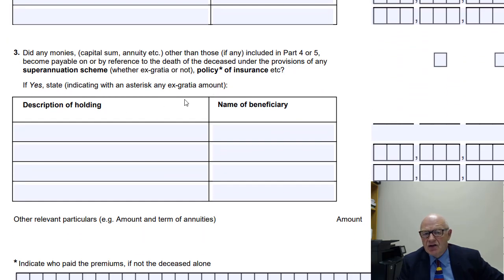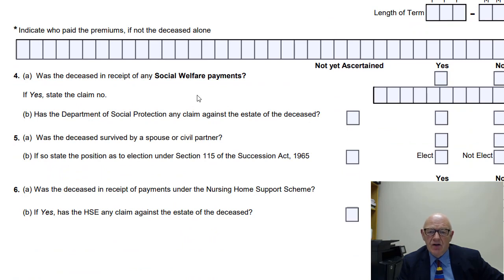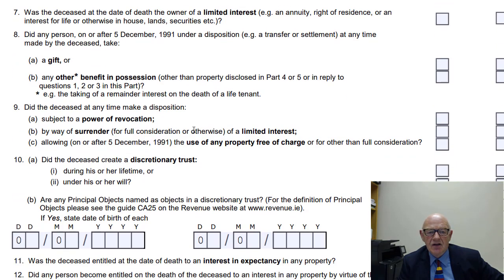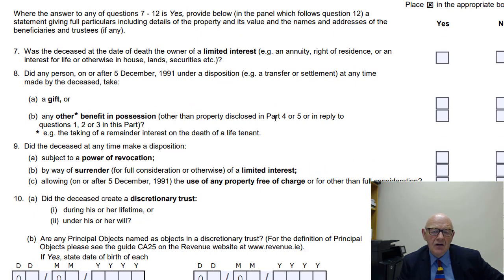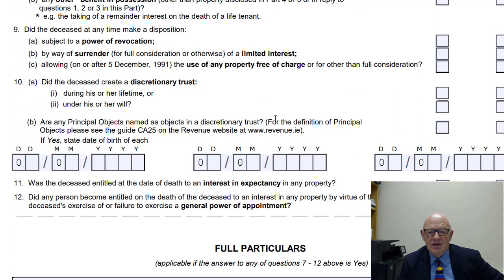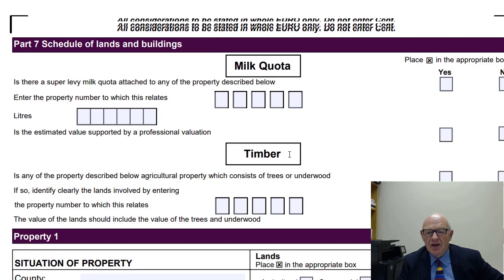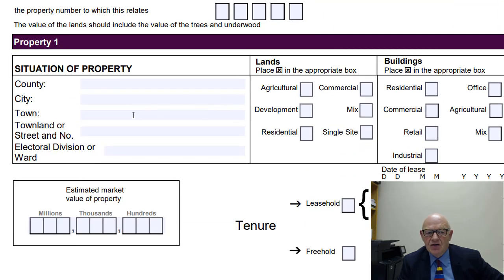There are questions in relation to superannuation schemes and policies of insurance. Then, was the deceased in receipt of any social welfare payments? You need to give the details and the claim number. There are also questions on whether the deceased was the owner of a limited interest, whether any person received a gift or other benefit in possession, power of revocation, and surrender. These are quite technical questions but they don't arise in the normal course. There's also a section on milk quota and timber, which may or may not be relevant.